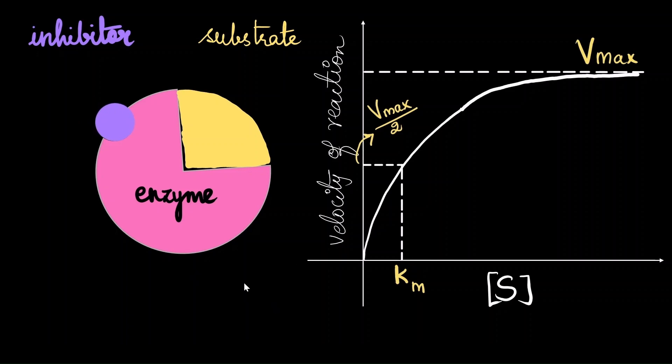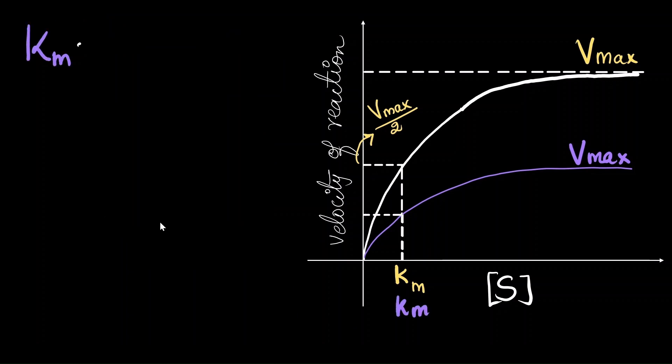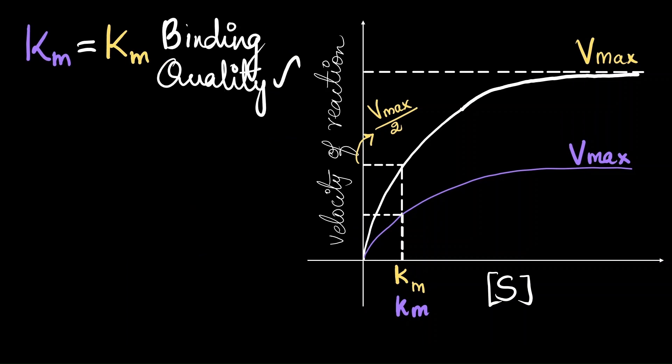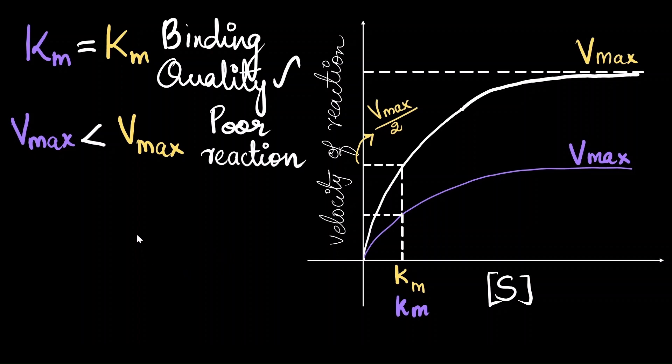If we were to plot a non-competitive inhibition reaction, this is what the graph would look like. We can see that the Vmax value has reduced, but the Km value remains the same. When the Km value of inhibited and uninhibited reactions are the same, it means there is no issues of binding between enzyme and substrate. But Vmax of inhibited reaction is much lower than the Vmax of uninhibited reaction, which means that the reaction quality is very poor.